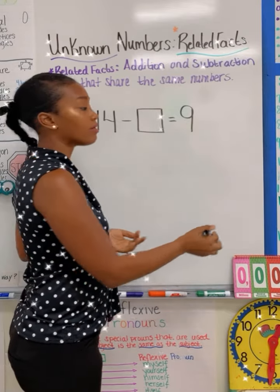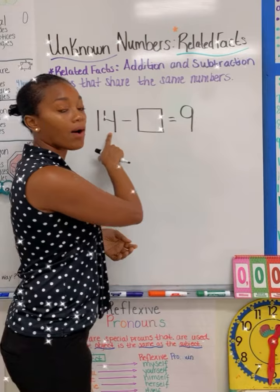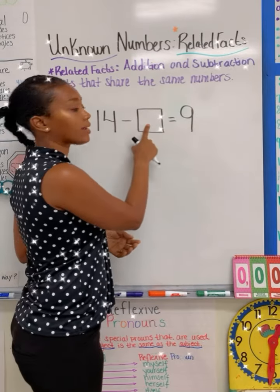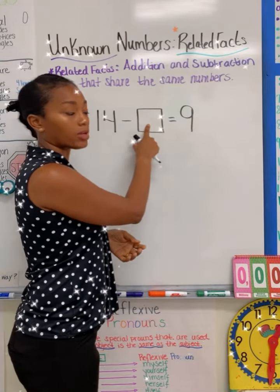but I do know that I can use the count on method to count up to 14 to find my missing unknown number. So here we go.